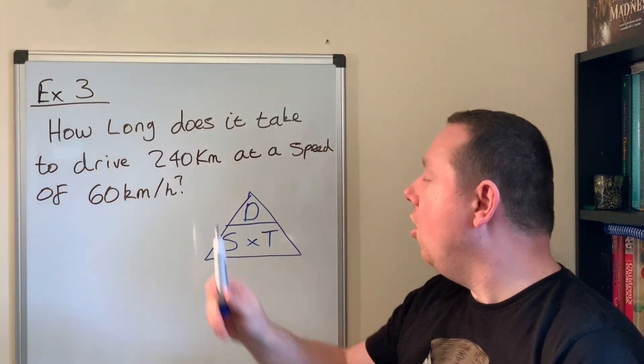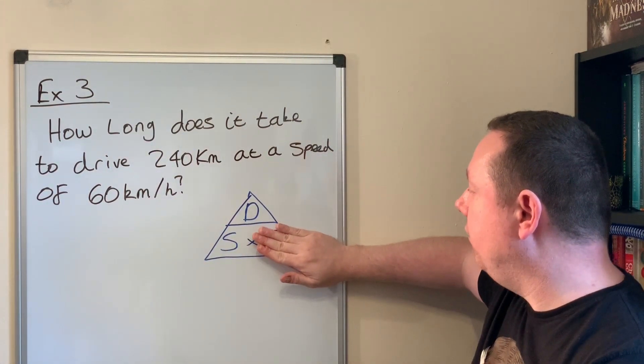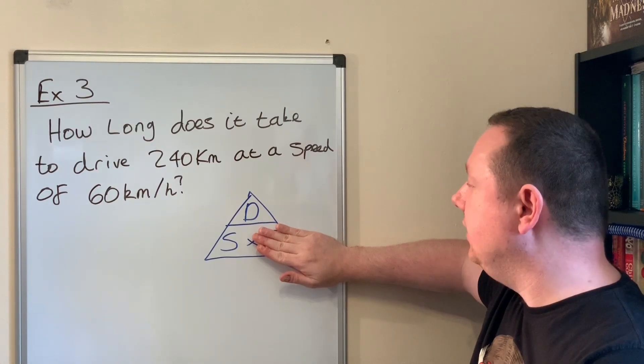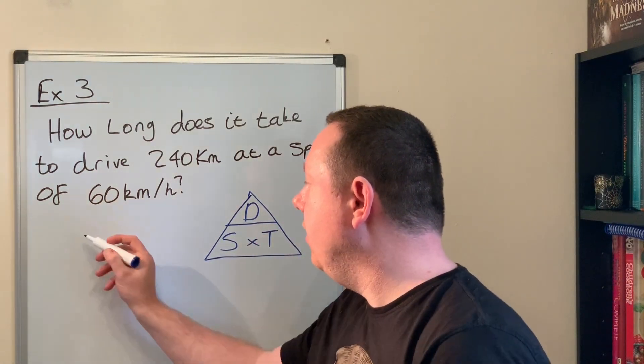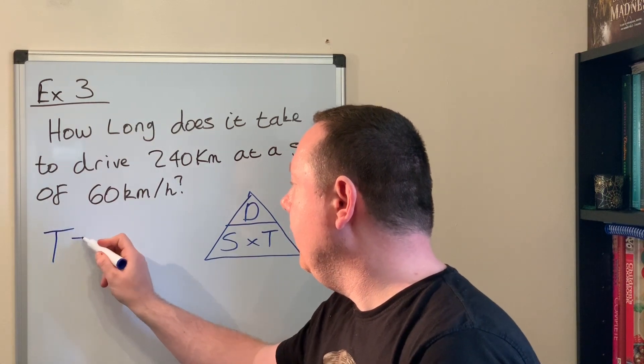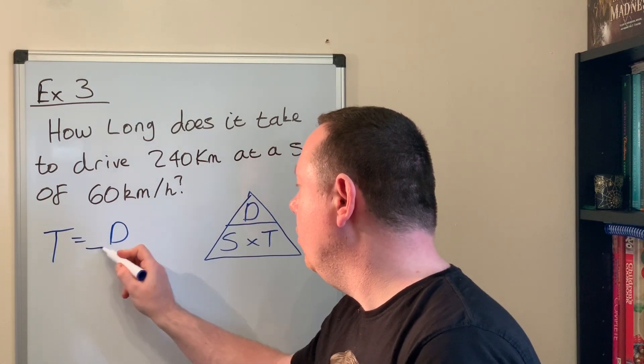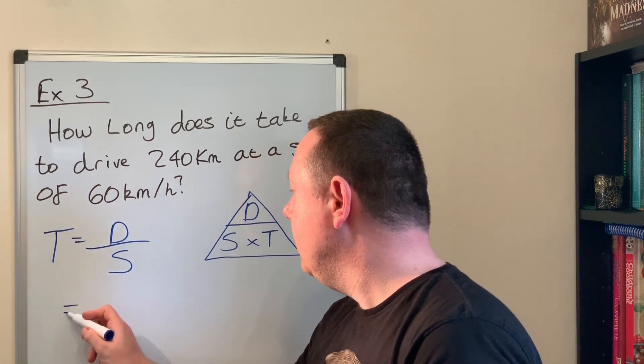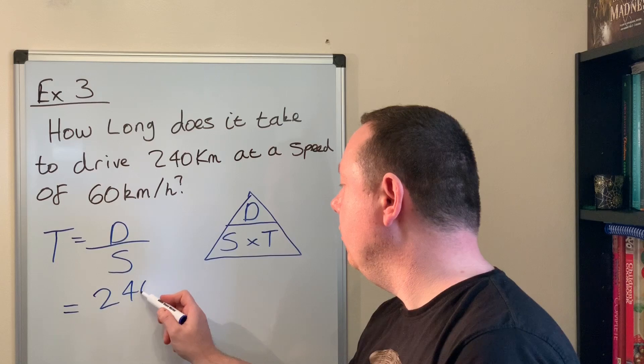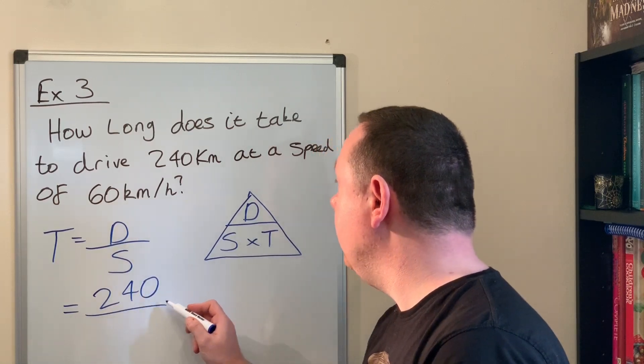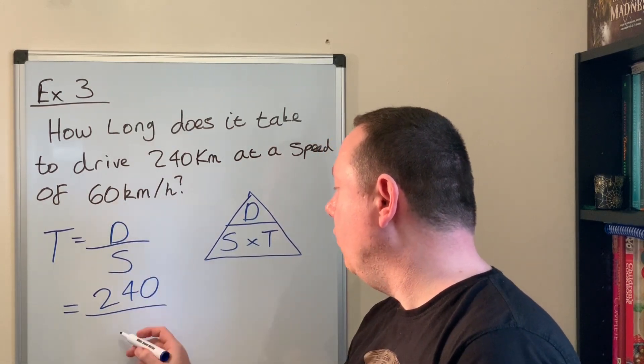I look at the question. 'How long?' - that's time. If I cover up time, it says D over S. So I can write T equals D over S. Our distance is 240, so that's 240 divided by my speed of 60.